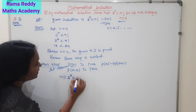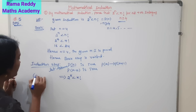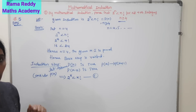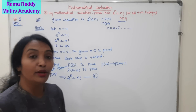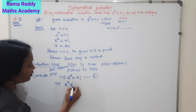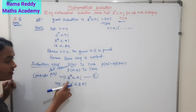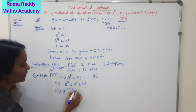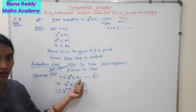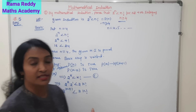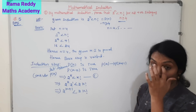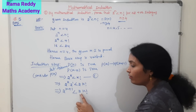P of k true means: 2 power k less than k factorial — consider this as equation 1. Now, multiply both sides by 2. Multiplying both sides by 2 gives: 2 power k times 2 power 1, which is 2 power k plus 1, is less than 2 into k factorial. We need to prove 2 power k plus 1 is less than k plus 1 factorial.